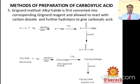Grignard method: alkyl chloride is first converted into the corresponding Grignard reagent and allowed to react with carbon dioxide; further hydrolysis gives the carboxylic acid.